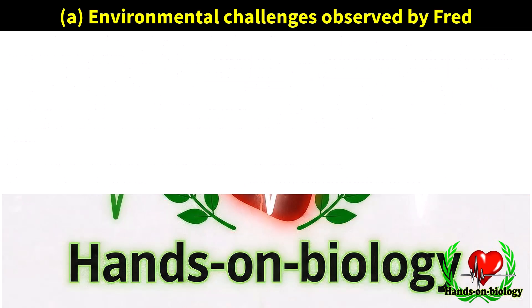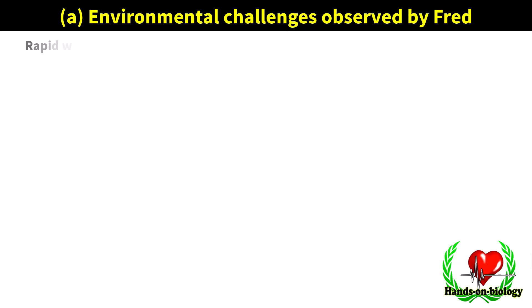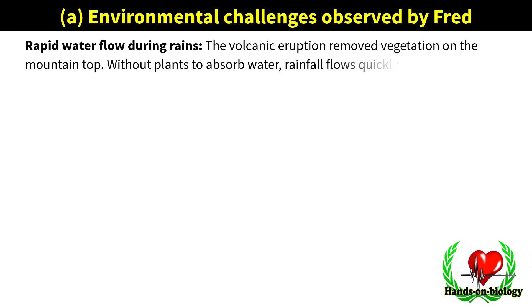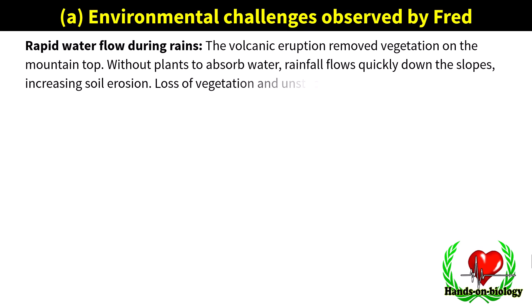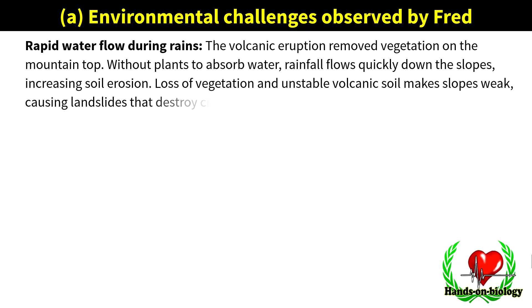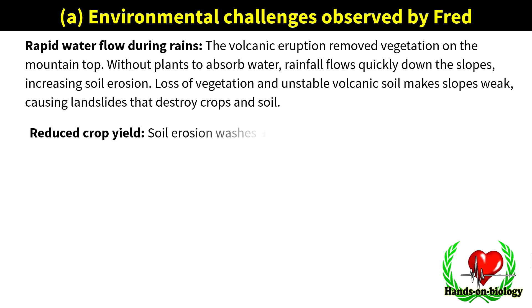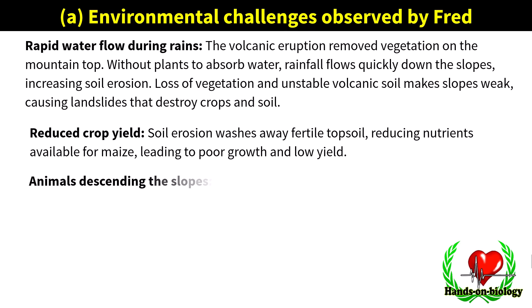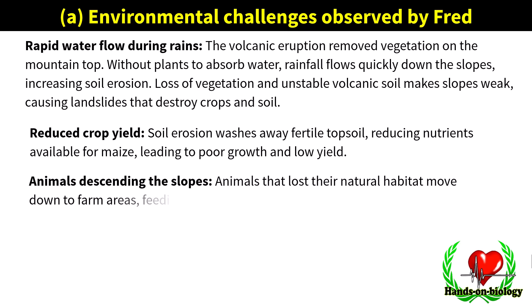Environmental challenges observed by Fred: rapid water flow during rains — the volcanic eruption removed vegetation on the mountaintop; without plants to absorb water, rainfall flows quickly down the slopes, increasing soil erosion. Loss of vegetation and unstable volcanic soil make slopes weak, causing landslides that destroy crops and soil. Soil erosion washes away topsoil, reducing nutrients available for maize, leading to poor growth and low yield. Animals that lost their natural habitat moved down to farm areas, feeding on crops and becoming pests to farmers.